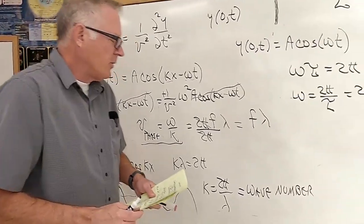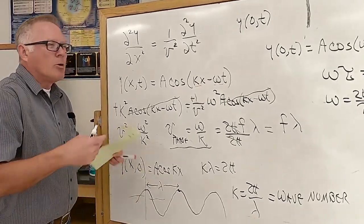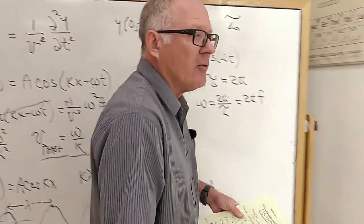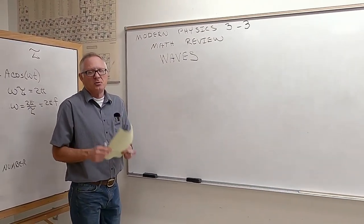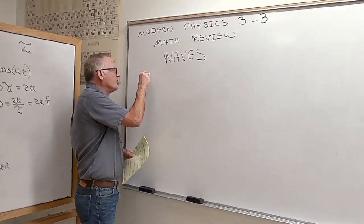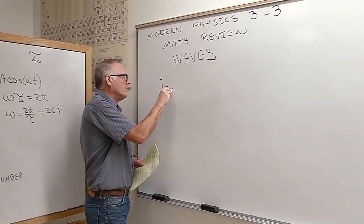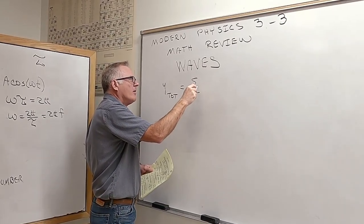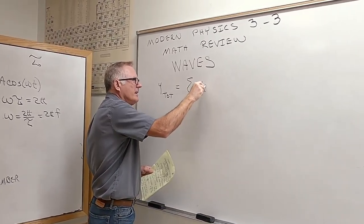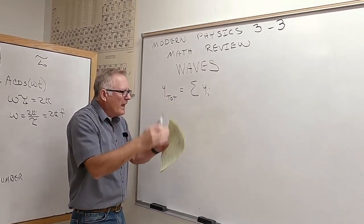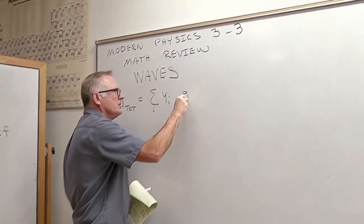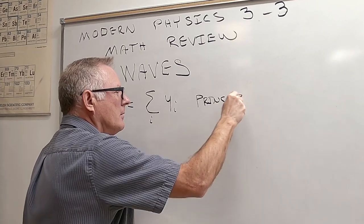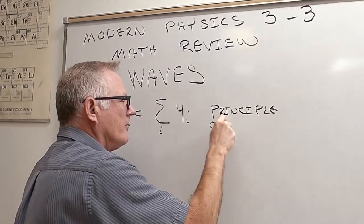When multiple waves are present — multiple sound waves, light waves — we apply the principle of superposition: the total y is simply the sum of all individual y's. The total wave is just the sum of all the individual waves. This is called the principle of superposition.